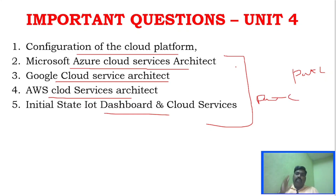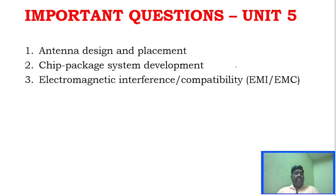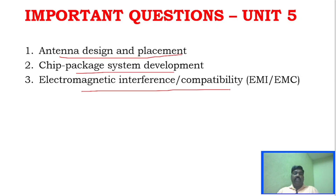Unit 2 and Unit 4 are the most important units. The recommended study order is: start with Unit 1, then Unit 5, then Unit 3, and then go through Unit 2 and Unit 4 in depth. For Unit 5, cover Antenna Design and Placement, Chip Package System Development, and Electromagnetic Interference and Compatibility — 2 questions from these topics are more than enough.